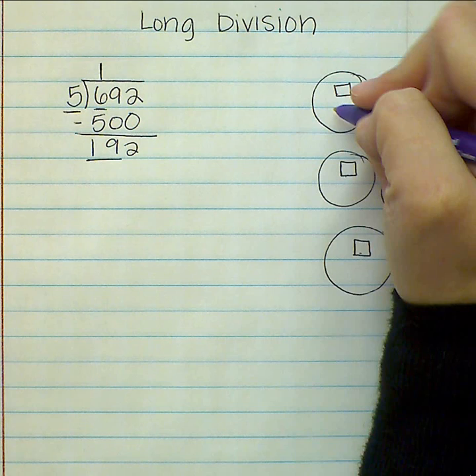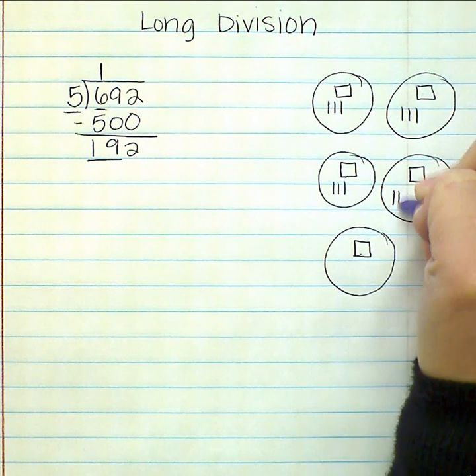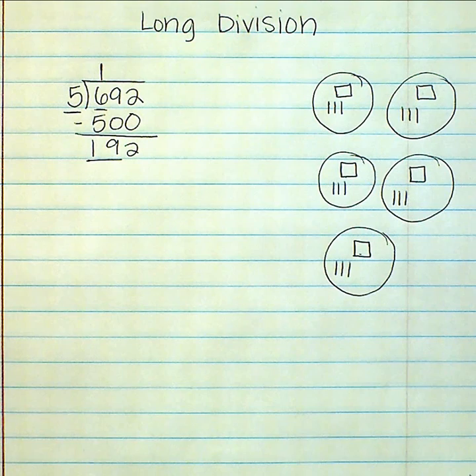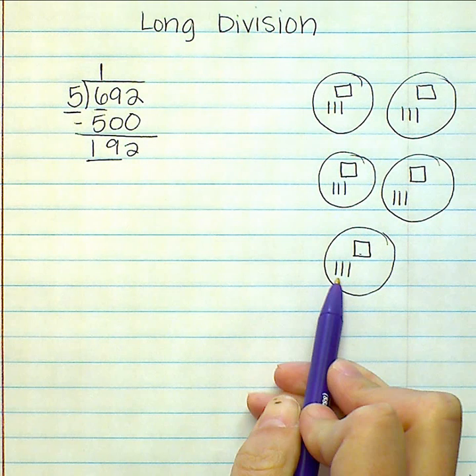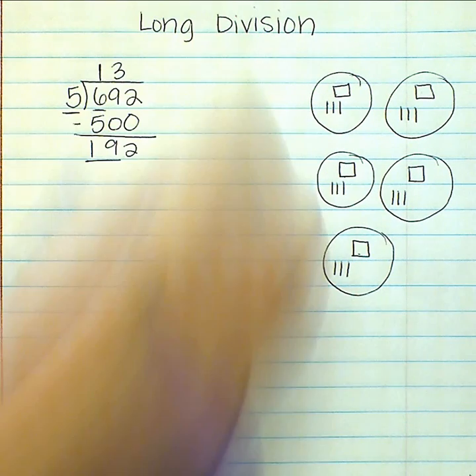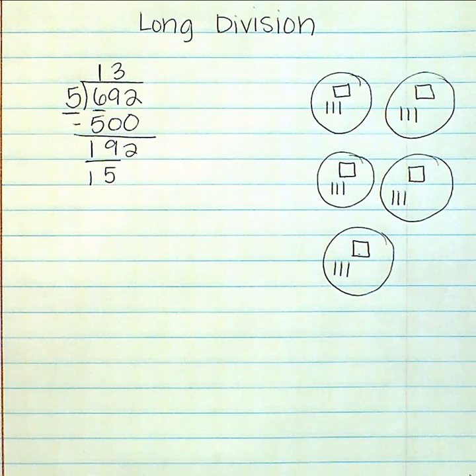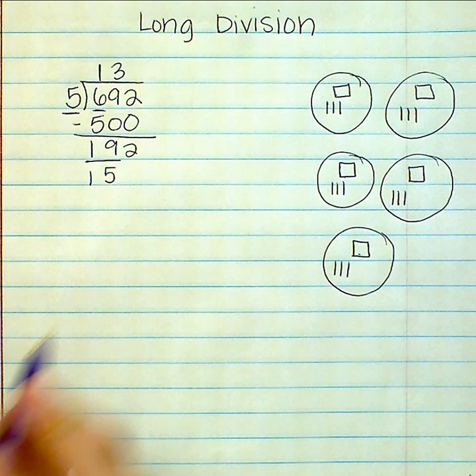I know that I can put three in each group. Each line represents ten in base ten blocks. So I put three tens in each group. I used fifteen tens altogether, but that's equal to one hundred fifty.